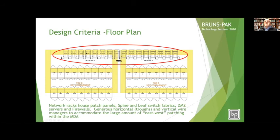The network racks house patch panels, spine and leaf switch fabrics, DMZ servers, and firewalls — with very generous troughs and horizontal cabling within four-post open racks, and very large wire managers going north and south. When you get into spine and leaf, where everything connects to everything, you get enormous east-west cabling — which is why there are troughs at the top, middle, and bottom of these racks. Generous horizontal troughs and vertical wire management should accommodate the large amount of east-west patching within the MDA.